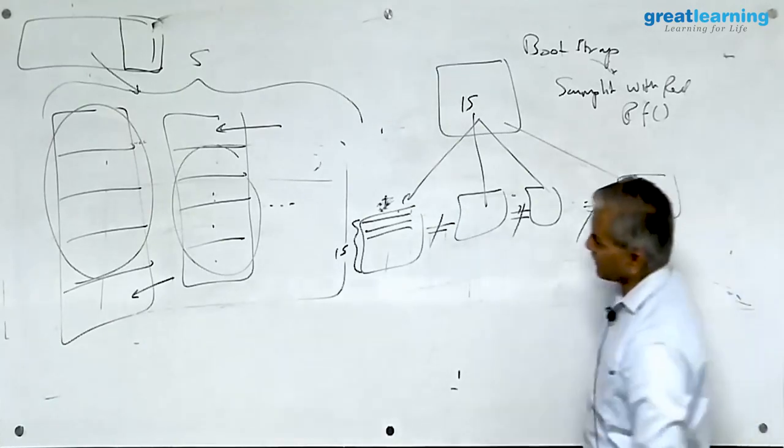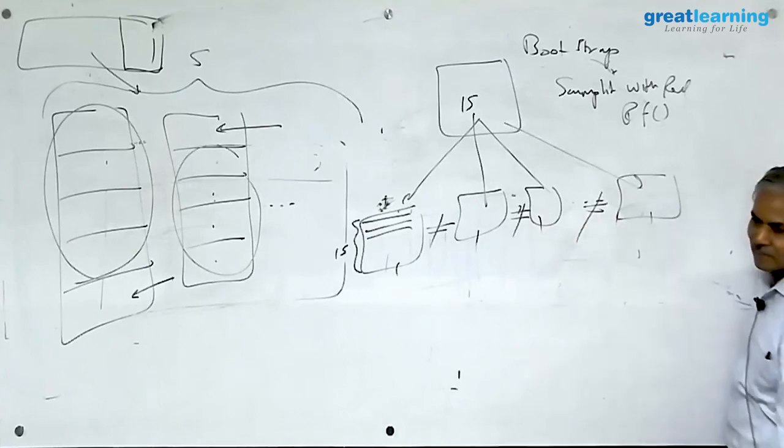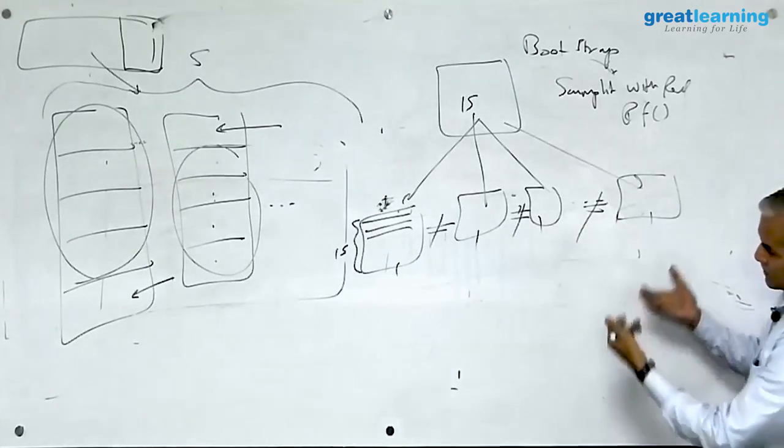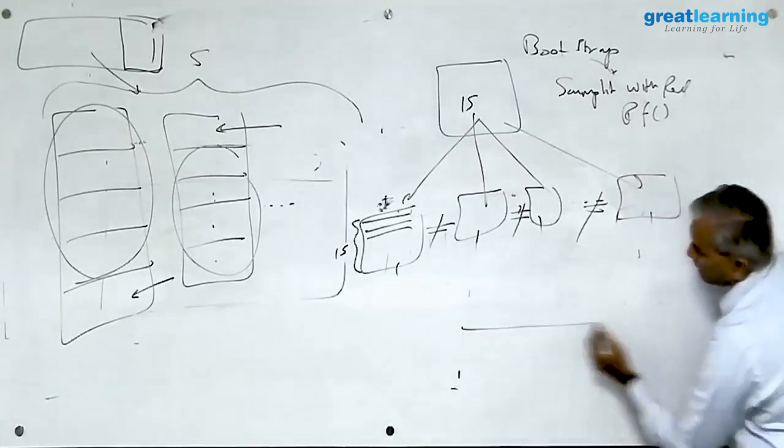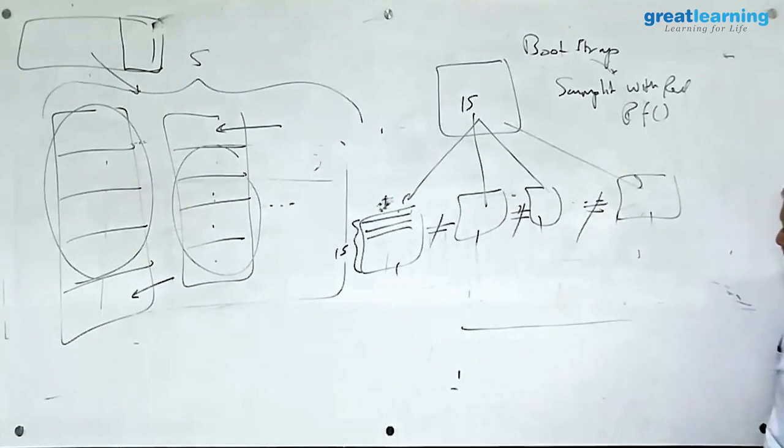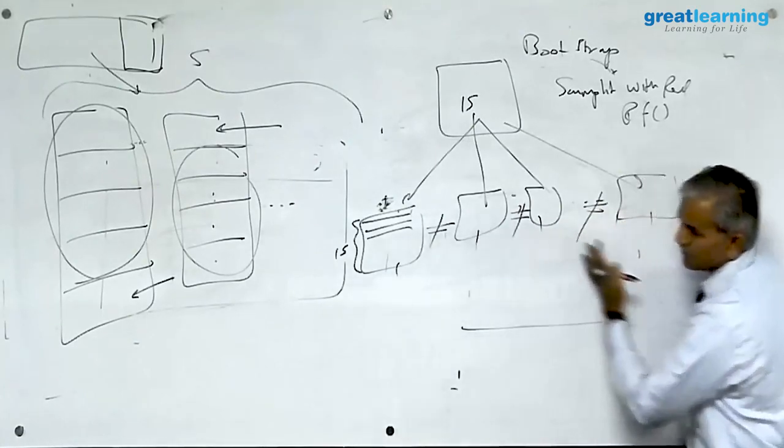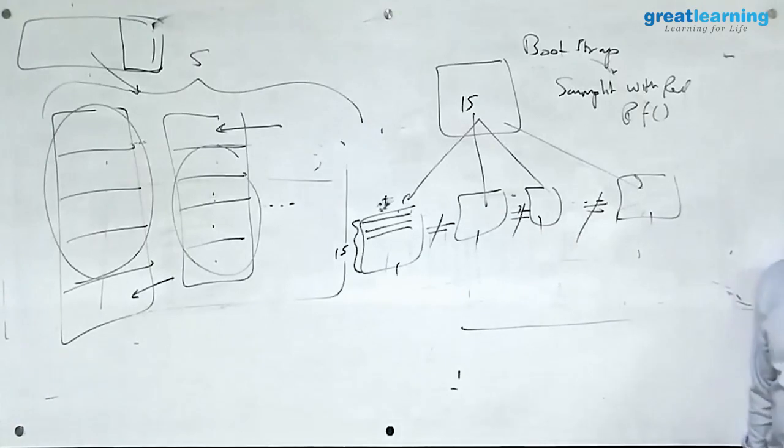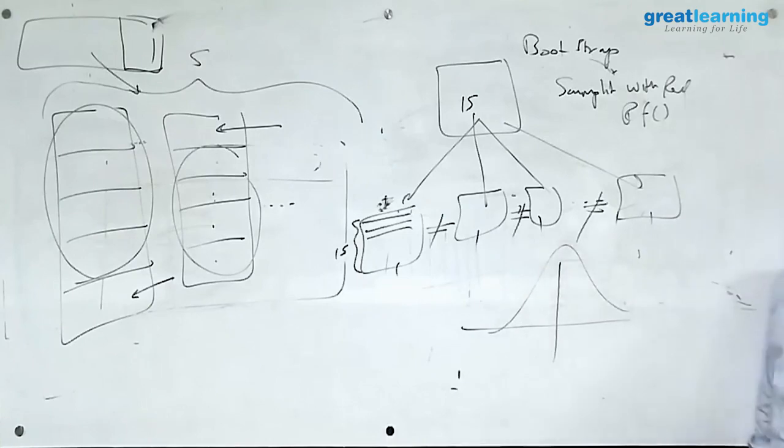On this bootstrap sampling, you run your models against each one of them. You run your models on each one of them. What will happen is, the advantage of running bootstrap sampling is, when you have many samples like this, you will see that the performance of your model across all the samples varies. There is variance in the performance. But you will see that the distribution of the variance acquires a normal property.